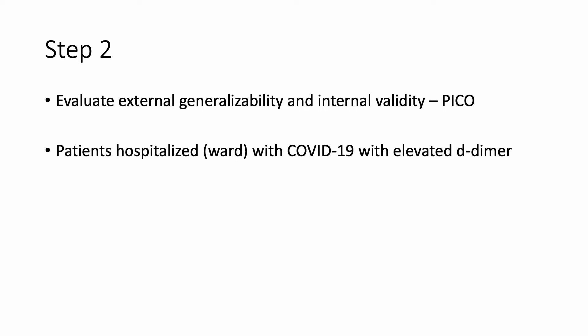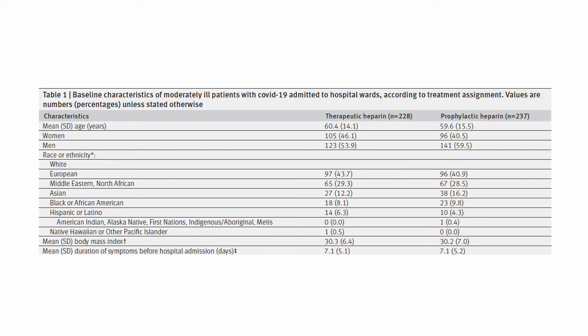P — the population — was patients hospitalized on the ward with COVID-19 and an elevated d-dimer. This sentence lets me identify whether the results will be generalizable to my patients. Looking at table one, the average age was in the 60s, about half women — consistent with patients I've cared for on the internal medicine ward with COVID, maybe a bit younger than some. So I'd think: perhaps these results won't apply to patients in their 80s and 90s.